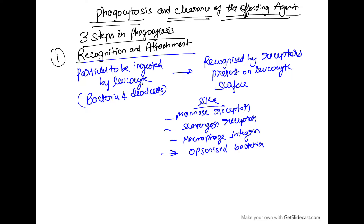There are three important steps in phagocytosis. The first step is recognition and attachment. The particle to be ingested by the leukocyte — like bacteria or a dead cell — needs to be recognized by receptors present on the leukocyte surface. To name a few: mannose receptors, scavenger receptors, macrophage integrins, and leukocytes can also recognize opsonized bacteria.